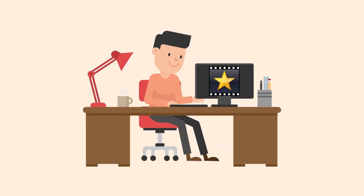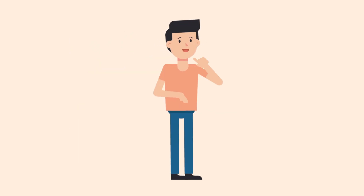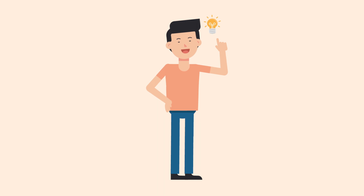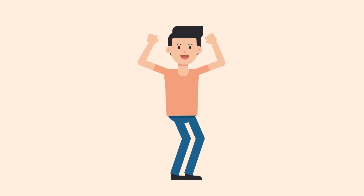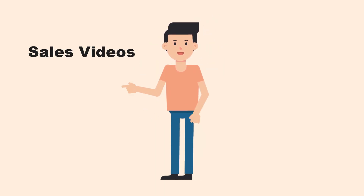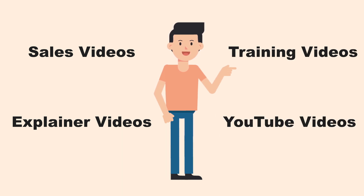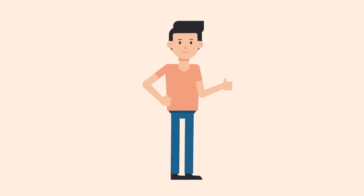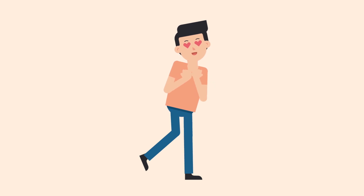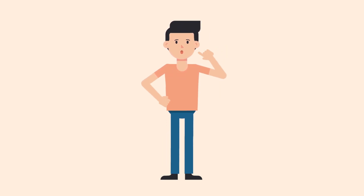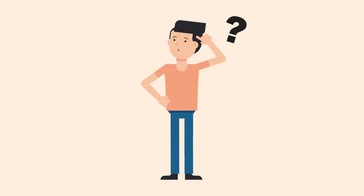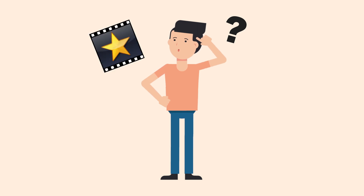So you've been using VideoPad for a while and decided this time to make an animated video. You see cool animated videos everywhere — sales videos, explainer videos, training videos or YouTube videos. So of course you want to make animations as well. They're awesome! And you might be wondering, how can you make professionally looking animations in VideoPad?